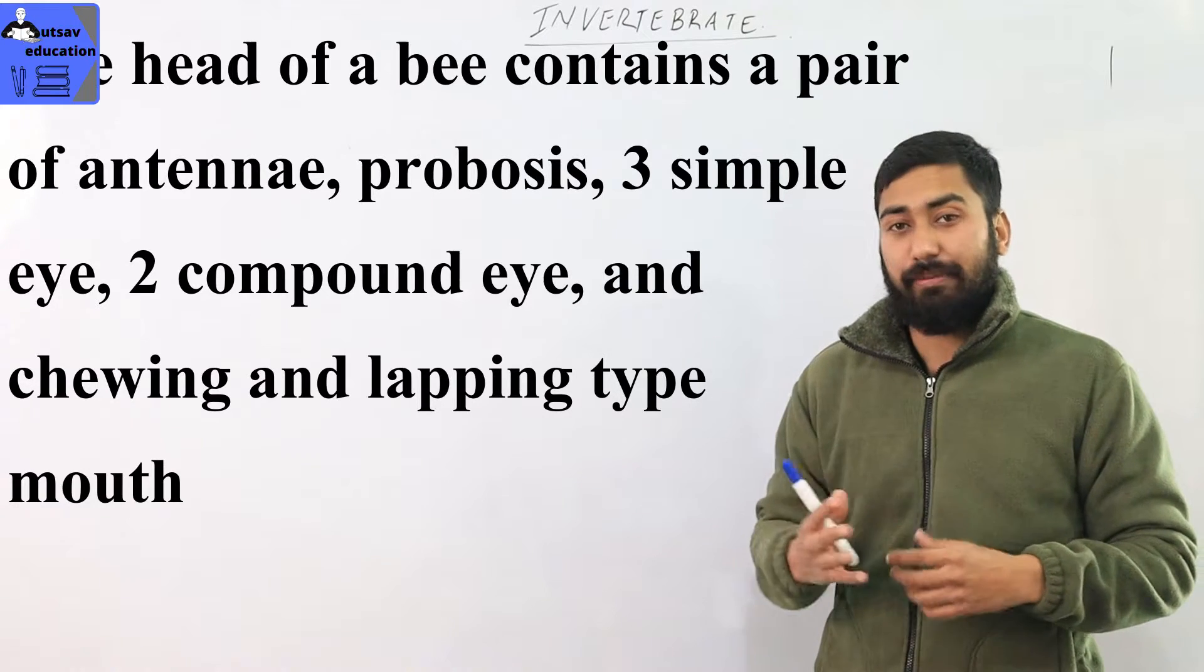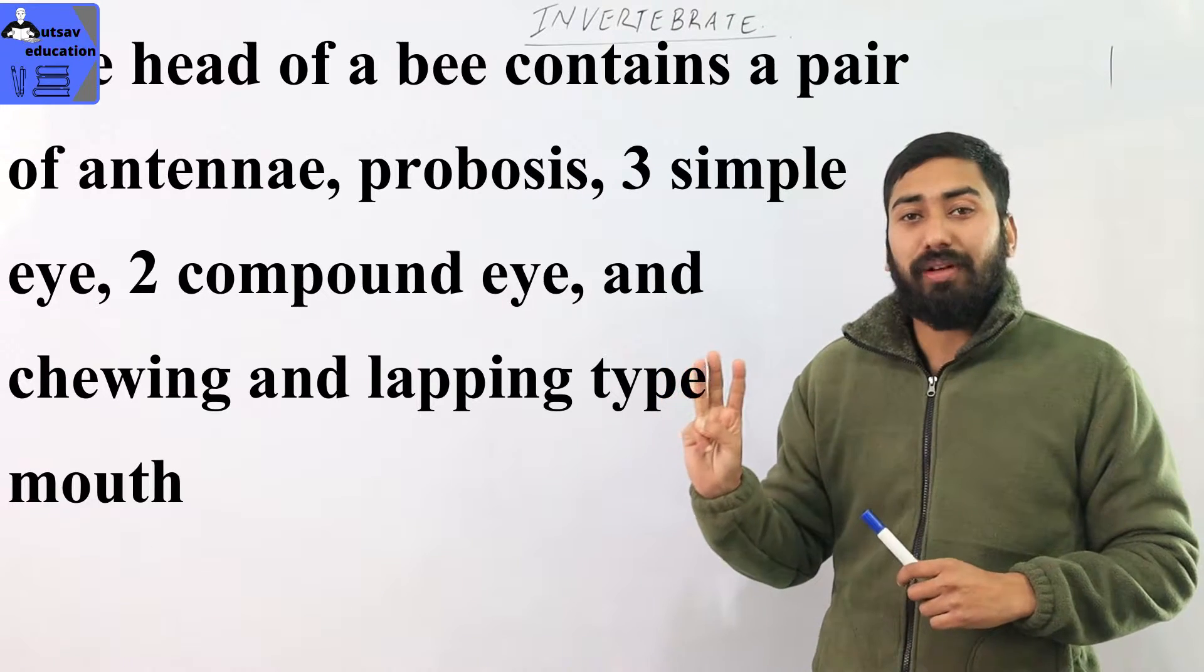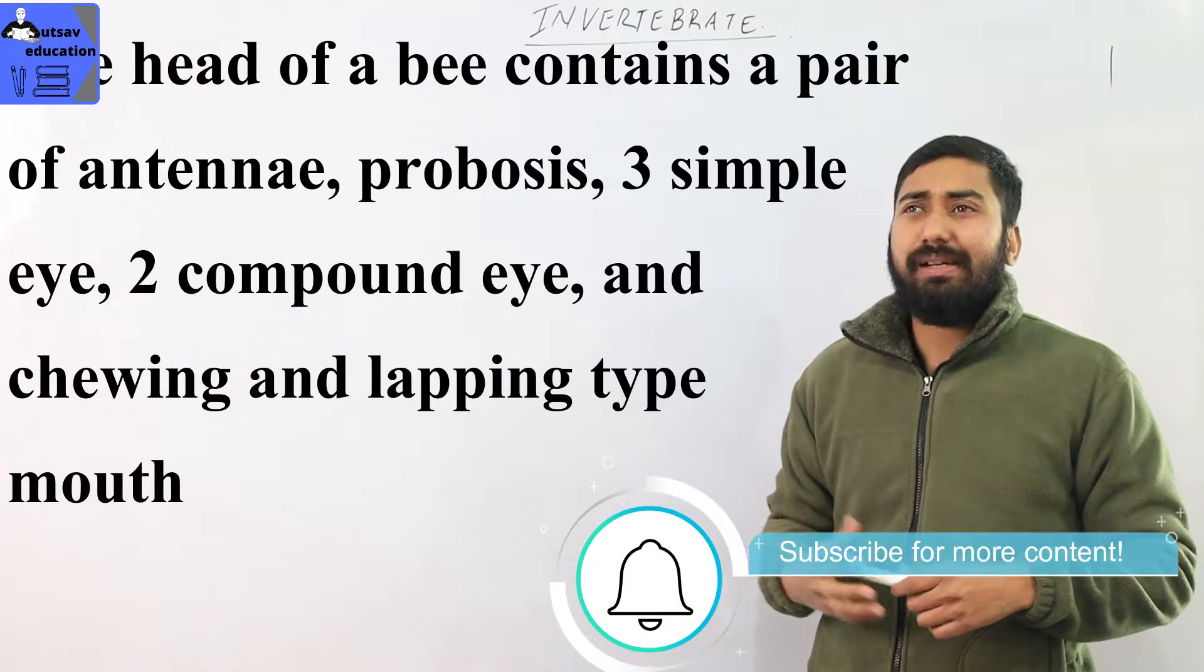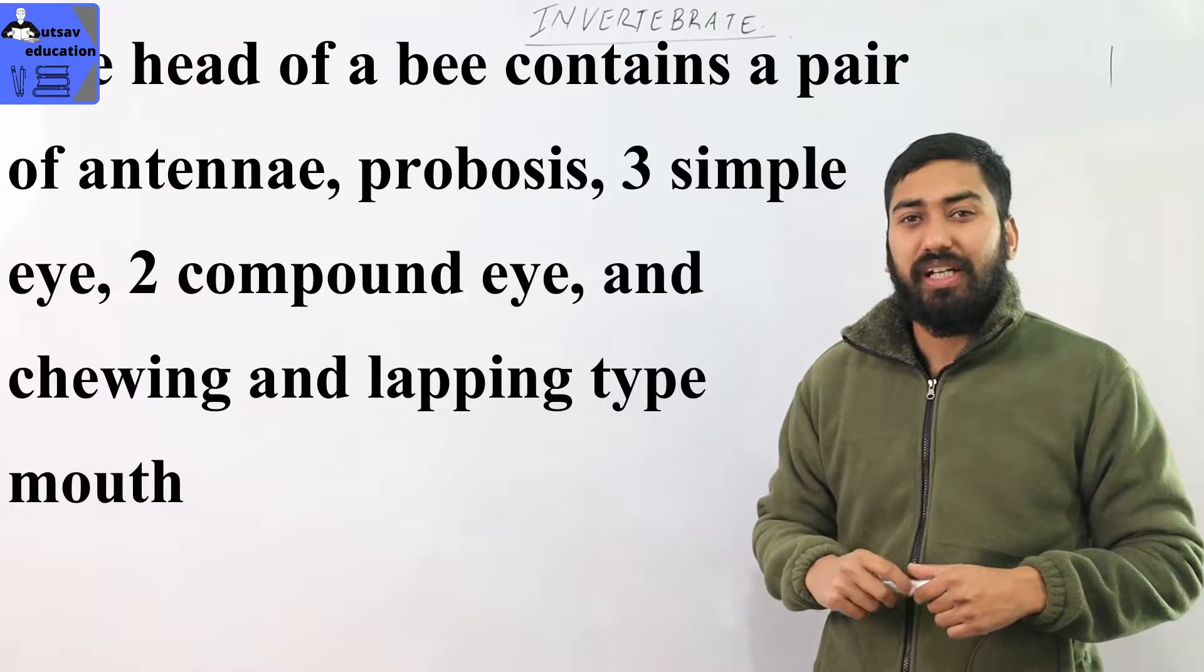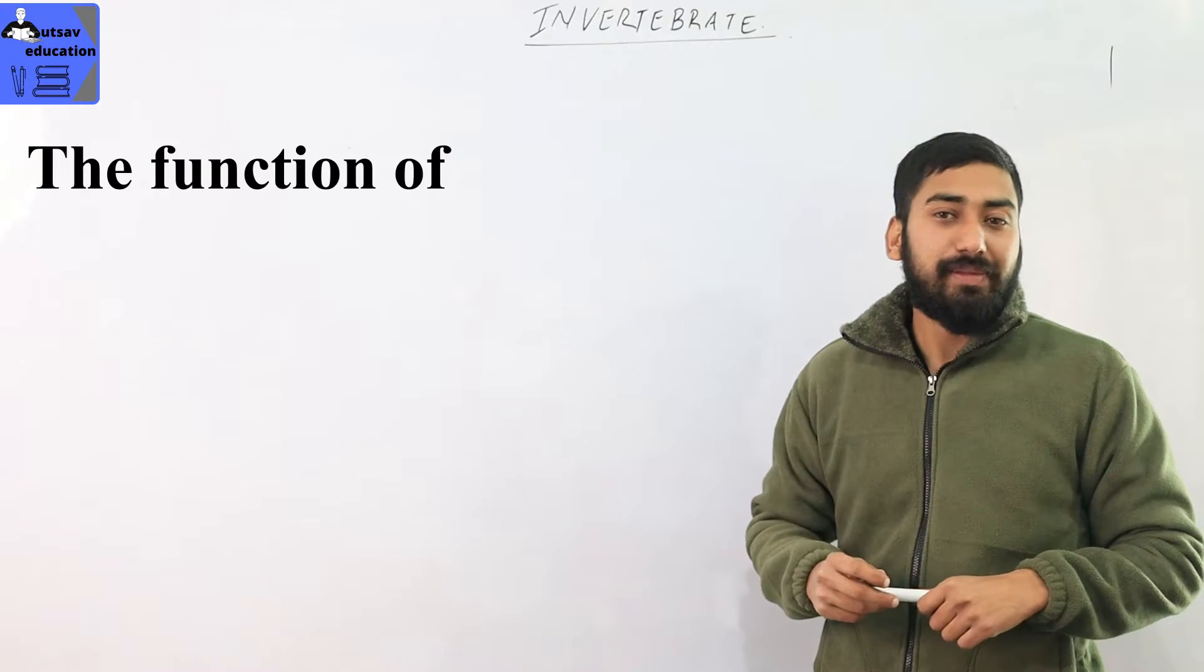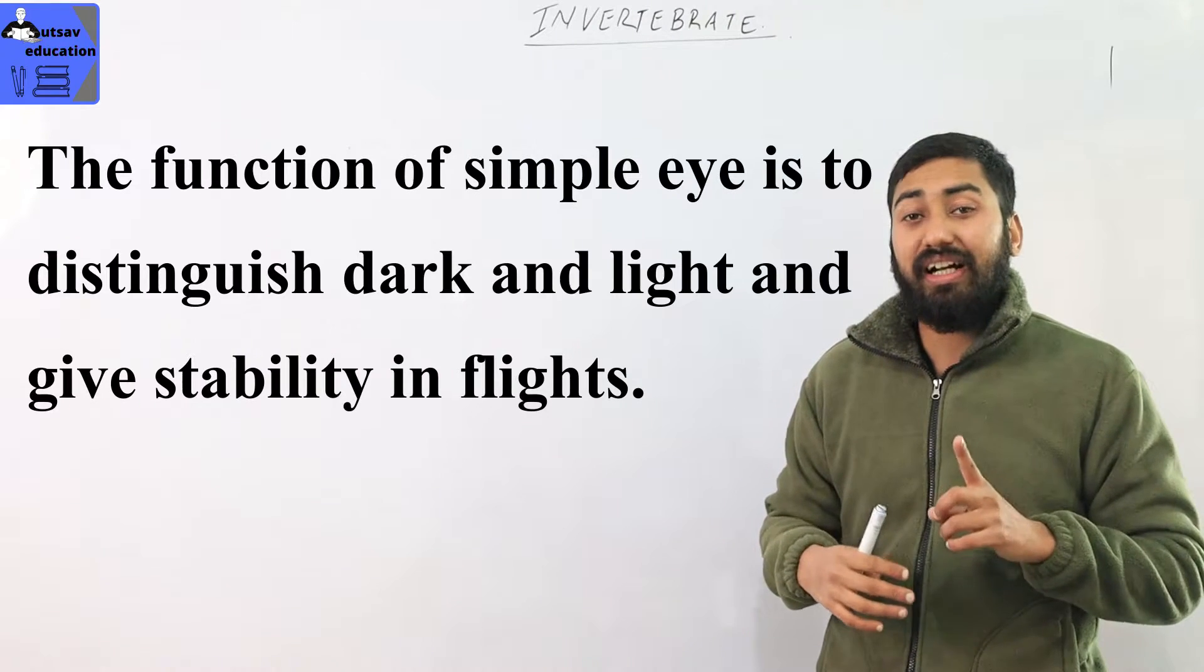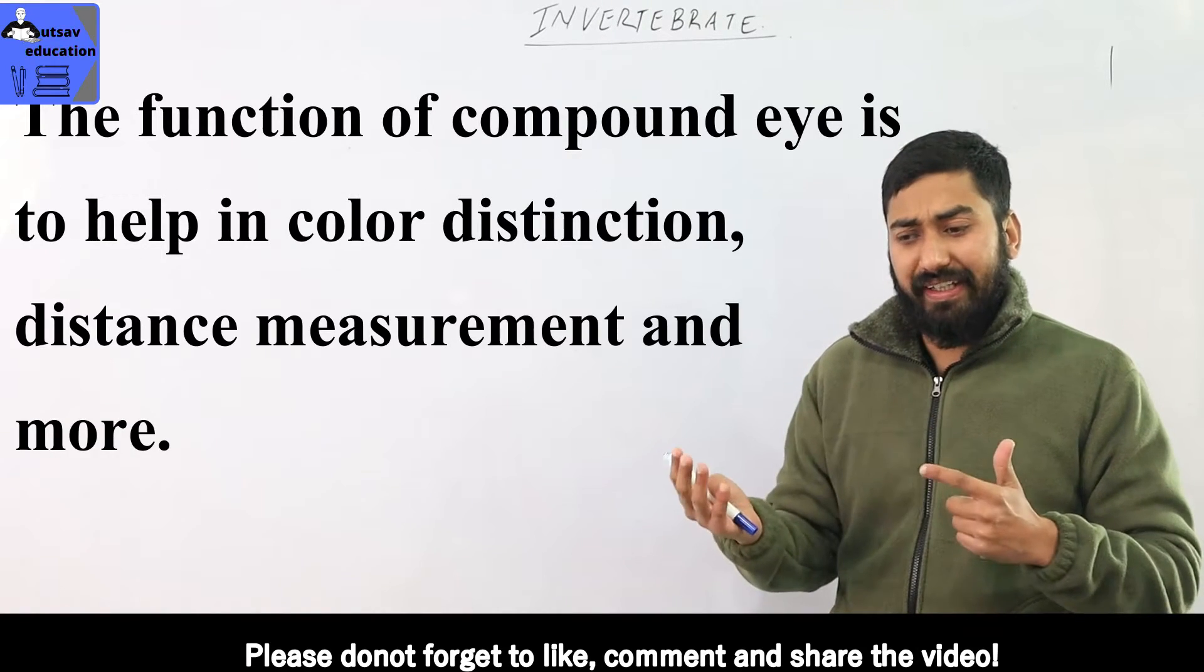There are 5 different eyes: 3 simple eyes called ocelli and 2 compound eyes. The compound eye has about 6000 different facets. Simple eyes provide flight stability and detect dark or bright conditions. Compound eyes are for distance measurement and color distinction.